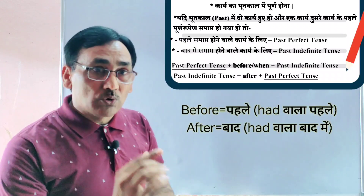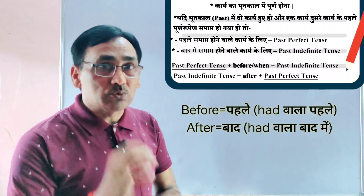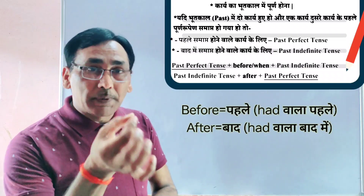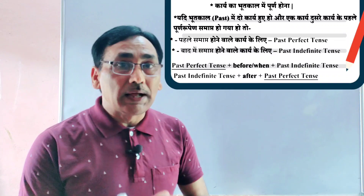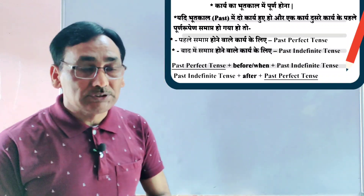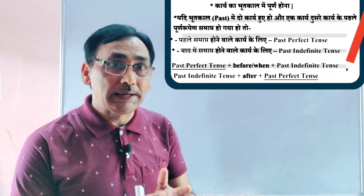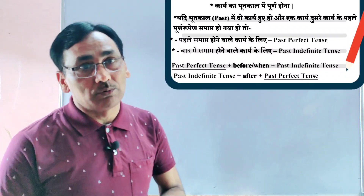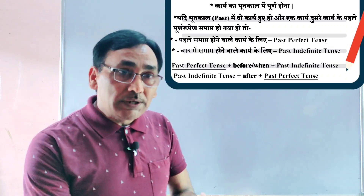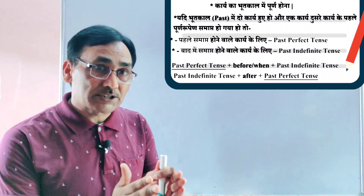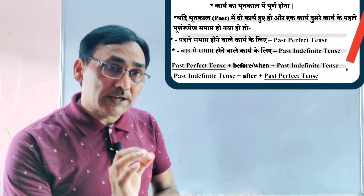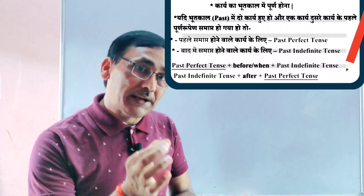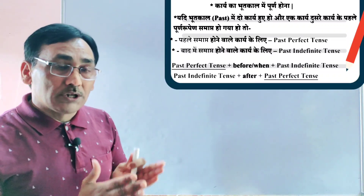After के साथ: HAD वाला clause after के बाद में लिखते हैं। Double clause sentences में दो actions होते हैं — एक action जो past में पहले हो चुका हो, और एक action जो बाद में हुआ हो। जो action पहले हो जाता है उसे Past Perfect में अनुवादित करते हैं, और जो action बाद में हुआ हो उसे Past Indefinite में लिखते हैं।